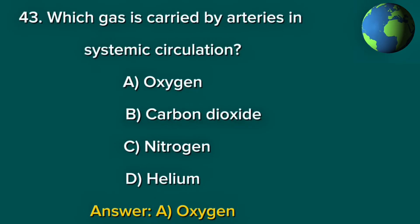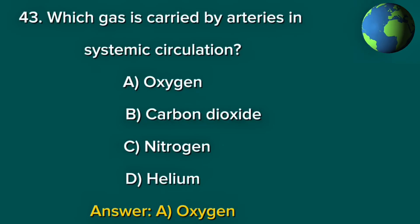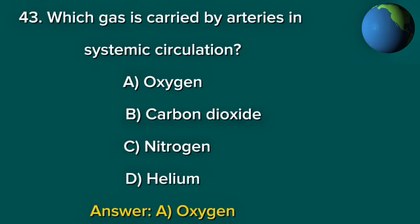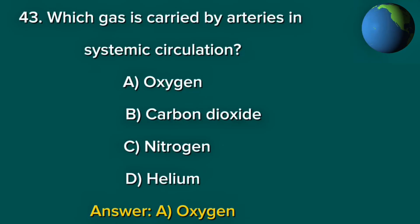Question 43. Which gas is carried by arteries in systemic circulation? A. Oxygen. B. Carbon dioxide. C. Nitrogen. D. Helium. Answer: A. Oxygen.